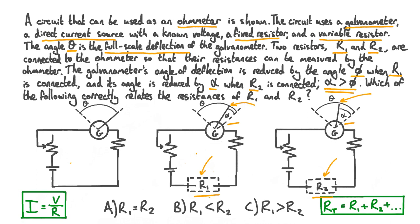Therefore we can conclude that R2 is greater than R1, or equivalently R1 is less than R2. If the galvanometer's angle of deflection is reduced by phi when R1 is connected, and by alpha when R2 is connected, and alpha is greater than phi, then the resistance of R1 is less than the resistance of R2.